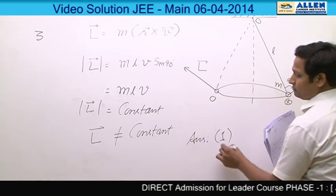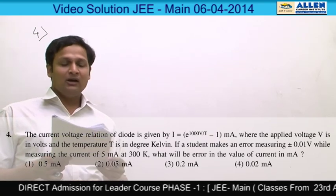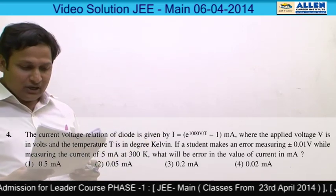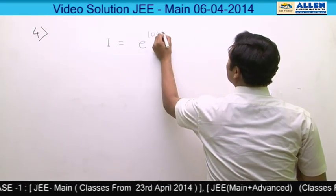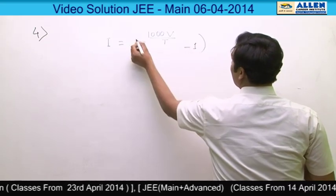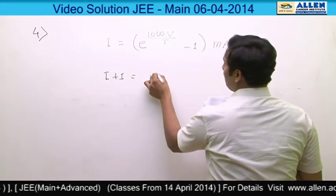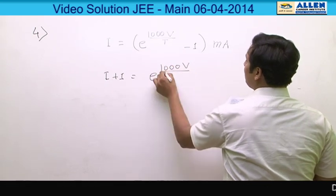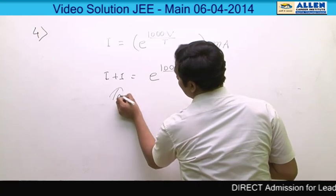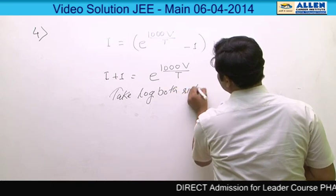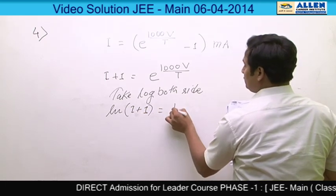Hence the answer to question 3 is option 1. Question number 4. The basic concept behind this question is error analysis. The question is testing your knowledge of error. The current-voltage relationship of a diode is given by I = e^(1000V/T) − 1, with units of milliampere. Taking −1 to the other side, I + 1 = e^(1000V/T). We have to find the error in I.